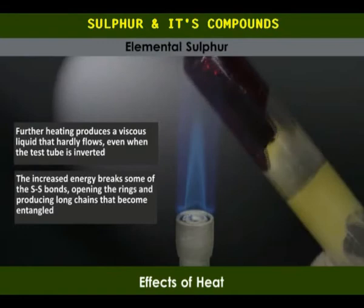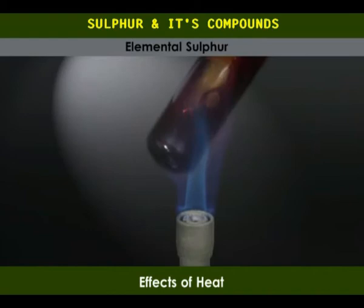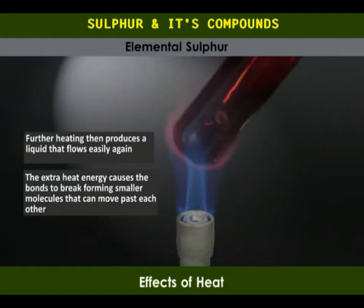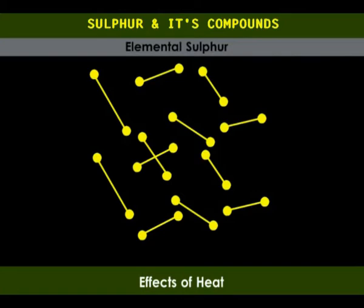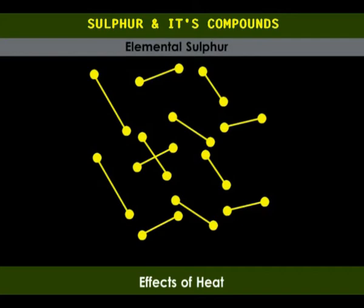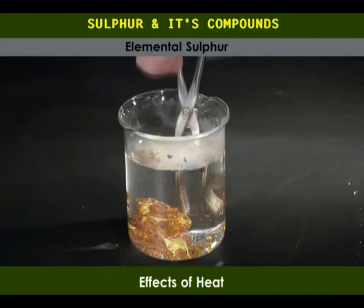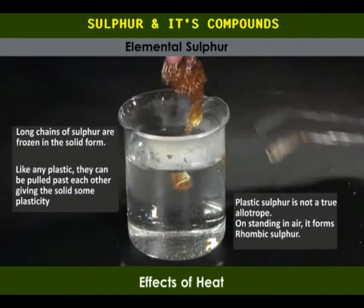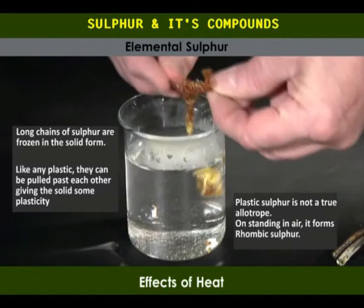As heating continues, the liquid becomes black and flows easily once again. This is because more covalent bonds break, resulting in smaller molecules which are less entangled, making the liquid less viscous. At a temperature of 444 degrees Celsius, the liquid boils, forming a brown vapor, as the molecules become smaller and smaller. When boiling sulfur is suddenly cooled by pouring it into cold water, the product is elastic and is called plastic sulfur. If this plastic sulfur is left for several days at room temperature, it will harden into rhombic sulfur.